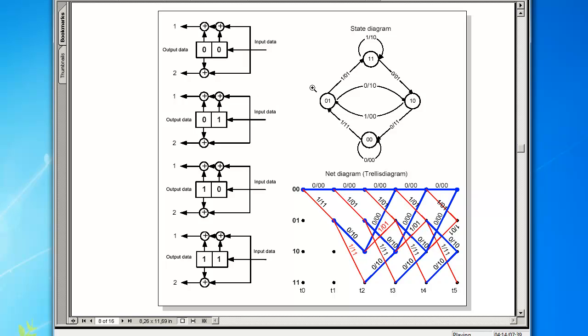The four different states of the shift register, state circles, are contained in the four circles.